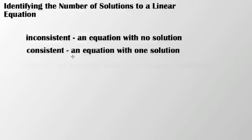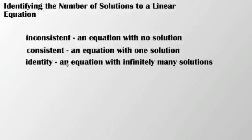One could be an inconsistent solution, and that's when you have an equation with no solution. The next is a consistent solution, that's an equation with one solution. And then finally you have an identity solution, and that's an equation with infinitely many solutions.